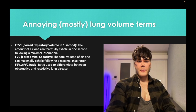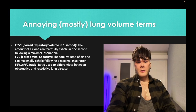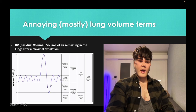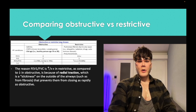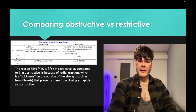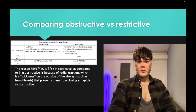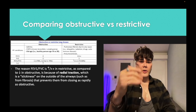FEV1 is the volume of air you can expire in one second after maximal inhalation. FVC is forced vital capacity. FEV1/FVC is decreased in obstructive and normal or increased in restrictive. FEV1 and FVC as independent terms are classically decreased in both obstructive and restrictive — but it's the ratio that differs.